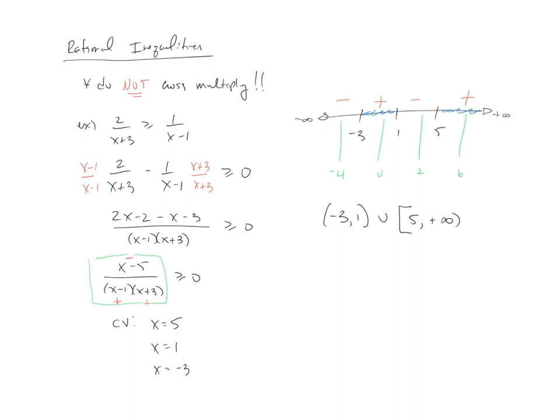So for these rational inequalities, you've got to remember from the beginning, do not cross-multiply. And at the end then, make sure your brackets are the correct ones based upon your denominator, not wanting it to be 0.